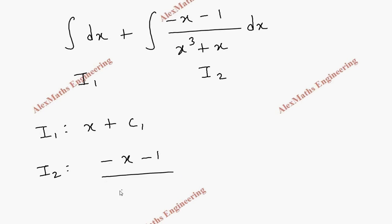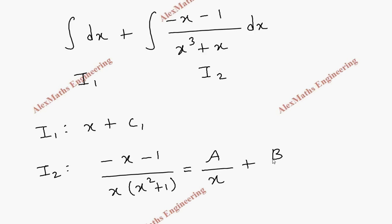Coming to I2, let's take the expression alone. In the denominator, let's take x common so we get x times (x² plus 1). And x² plus 1 is a non-factorisable quadratic expression, so we have to apply the partial fraction rule: A over x plus (Bx plus C) over (x² plus 1).